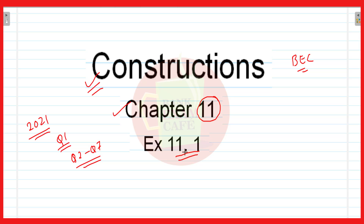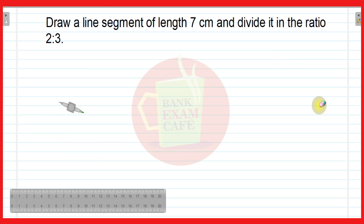I am not taking the same question which is in Exercise 11.1, but I am taking a different question, so let us move to that. Here is the question on the screen: draw a line segment of length 7 centimeters and divide it in the ratio 2 is to 3.